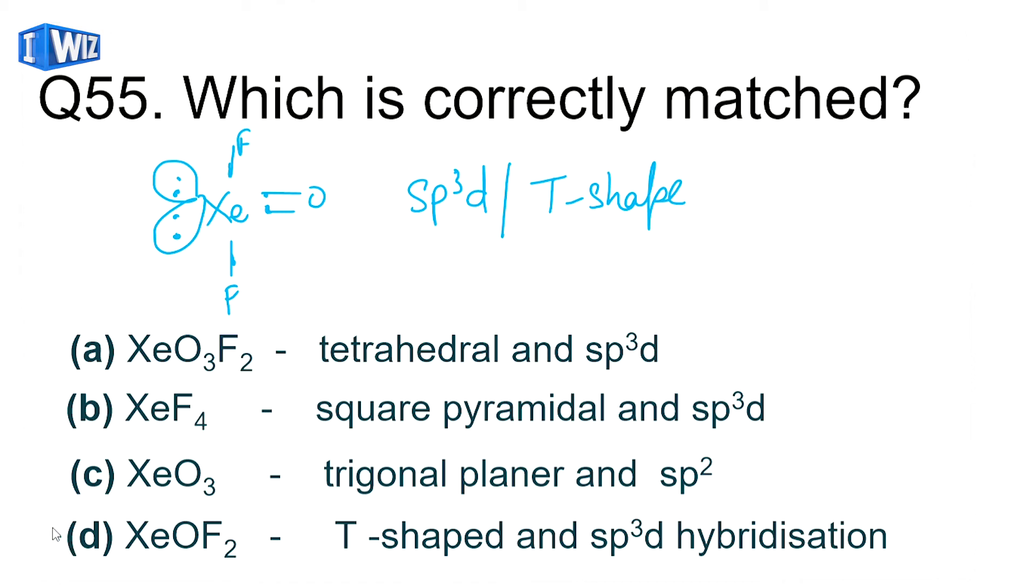Looking at the others, XeO3 is pyramidal not trigonal planar. XeF4 is square planar with two lone pairs and four bonds. XeO3F2 has too many bonds forming, eight bonds, which is not possible. So D is the correct option.